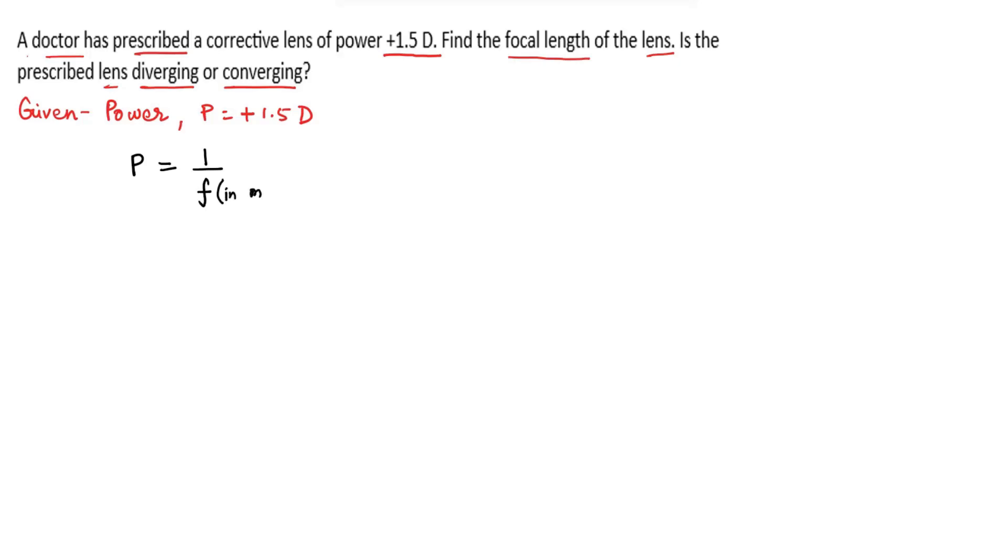Now here we can write F = 1/P. Now substituting the value for P here, P is 1.5. After solving this we get F = 0.66 meters.